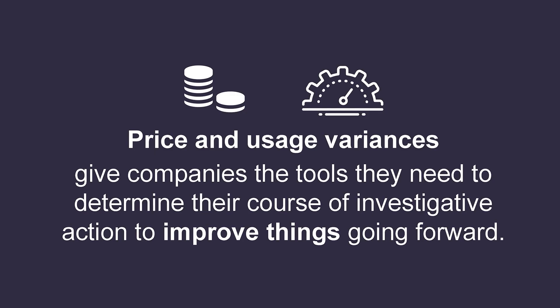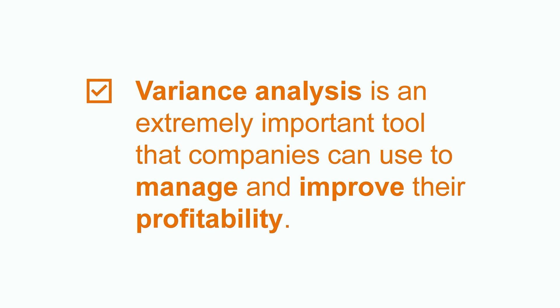Calculating these variances would help us determine whether the issue resulted from the purchasing team spending more than expected on the price of the materials, or whether the production department ended up using more volume of materials than anticipated. The result of this analysis will give the company the tools they need to determine their course of investigative action to improve things going forward. And that brings us to the end of this video. Variance analysis is an extremely important tool that companies can use to manage and improve their profitability. It allows organizations to both pinpoint things that are going well, while also narrowing in on areas of improvement going forward. If you're interested in learning more about this topic or others, please feel free to check out our additional videos on many more related topics.